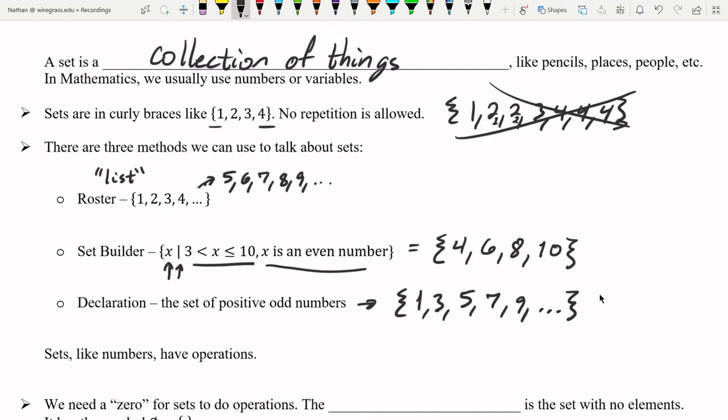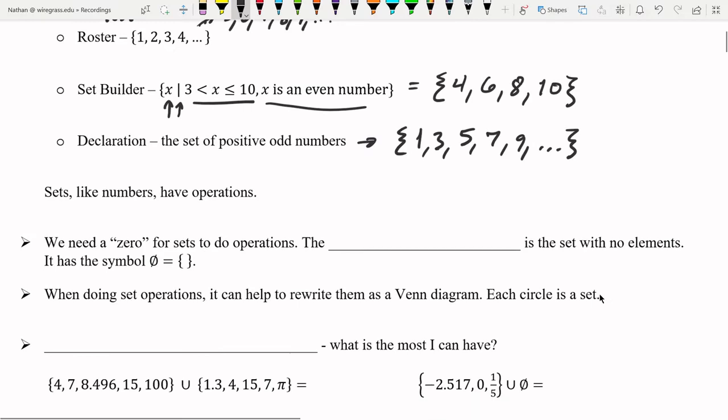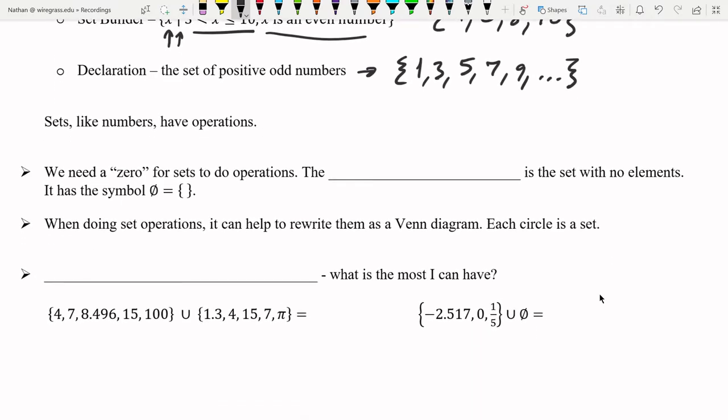Now, these sets have operations. Before we can do an operation, we need to have a zero for a set. And this is called the empty set.